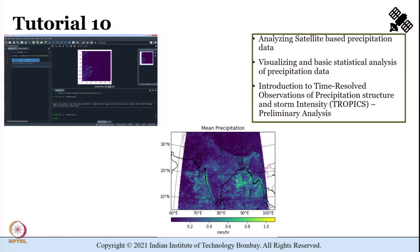In Tutorial 10, our focus shall be on precipitation estimates from passive microwave satellites and how to analyze them using Python. For this tutorial we shall be using precipitation estimates from the Global Precipitation Measurement (GPM) satellite. In addition, we shall also learn about preliminary data analysis using TROPICS — Time Resolved Observations of Precipitation Structure and Storm Intensity — a mission proposed to be launched in 2022.